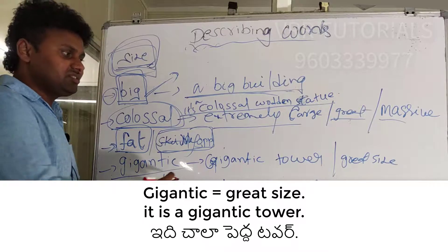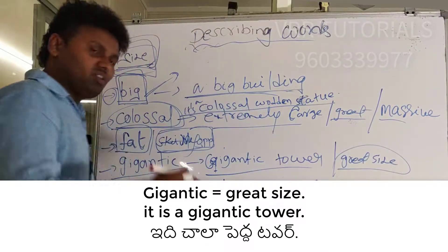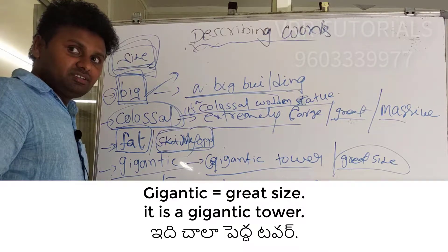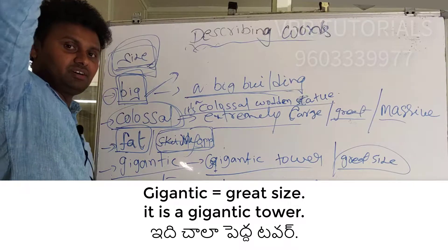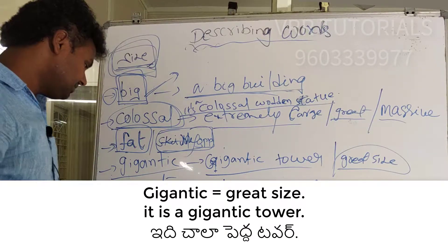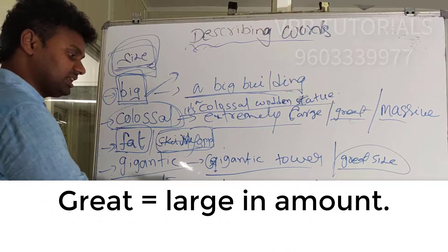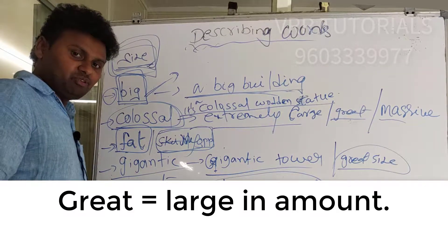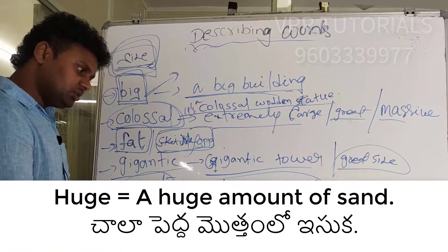Next is 'gigantic,' which means of great size or very long. For example: it's a gigantic building, or it's a gigantic tower — meaning something very large. The next word is 'great,' meaning large in amount. For example: I spent a great deal of money.